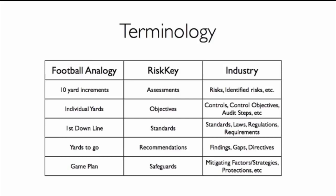The last element in the analogy is your overall game plan — your policies, procedures, and mitigating strategies that help you meet your goal. Just as the offense tries to overcome the defense, the bank uses plans and controls to overcome threats and risks. In Risky terminology, these are called safeguards — your protections that mitigate risk. In the industry, these are referred to as mitigating factors, strategies, or protections, and they typically vary from organization to organization.